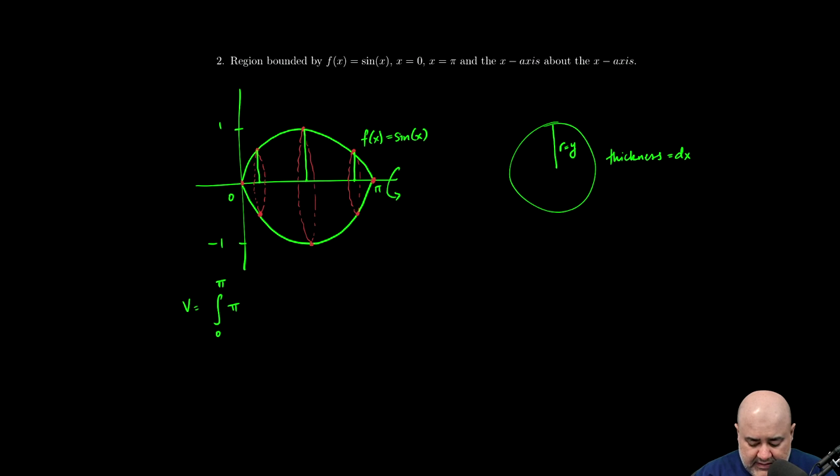Pi times the radius squared dx. So we have the integral from zero to pi of pi times, well, my radius is y, so I'll write that here. And unlike the previous example where y was always three, in this case the y value will change.